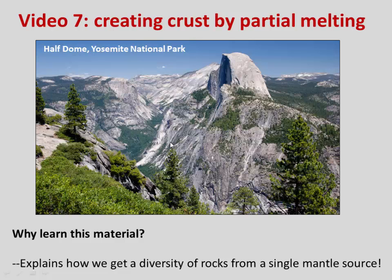Hi everybody, welcome to video number seven. By this point you may know that we have a variety of different igneous rocks on Earth. We've got mafic rocks, we've got felsic rocks, and everything in between. You might also know that those igneous rocks are all derived from a single source — Earth's mantle — this 3,000 kilometer thick storehouse of silicate rock left behind after Earth's big differentiation event. So one of the interesting questions is: how did we get such a variety of igneous rocks on Earth's surface if it all came from a single, basically homogenous source in the mantle?